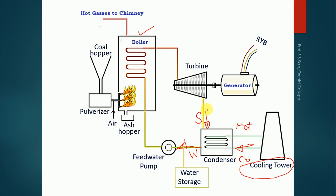The steam that entered the condenser comes out as water, which is sucked by the feed water pump and supplied back to the boiler. This completes the full cycle: the boiler supplies steam to the turbine, the turbine passes steam to the condenser, the condenser produces water, and the feed water pump returns that water to the boiler.